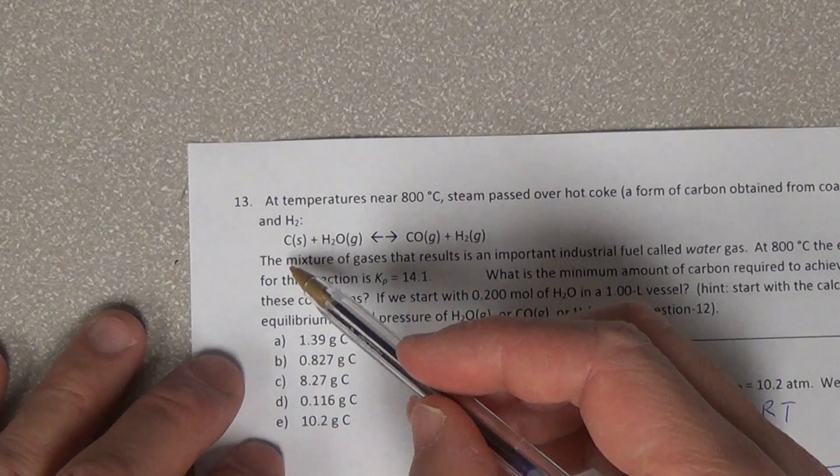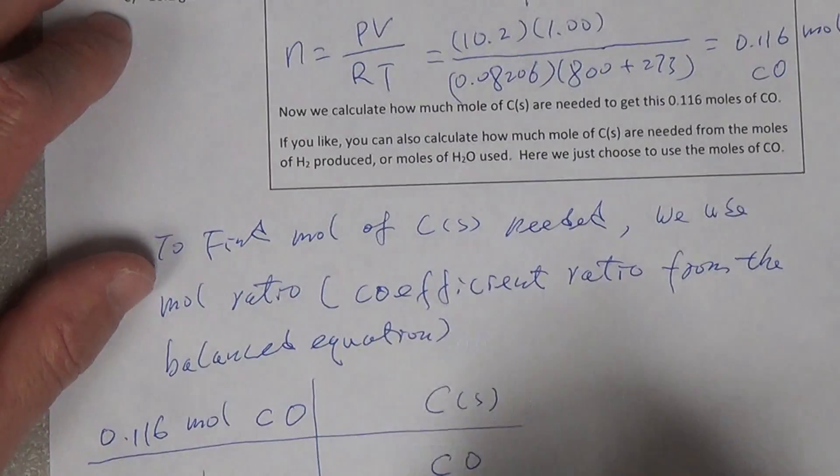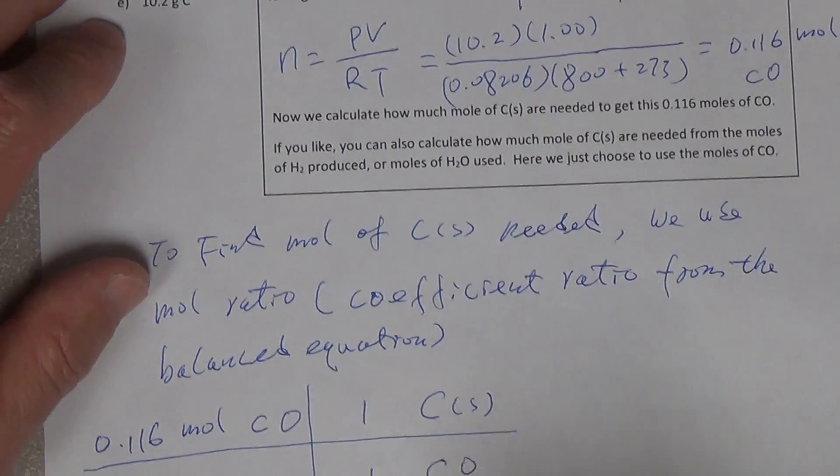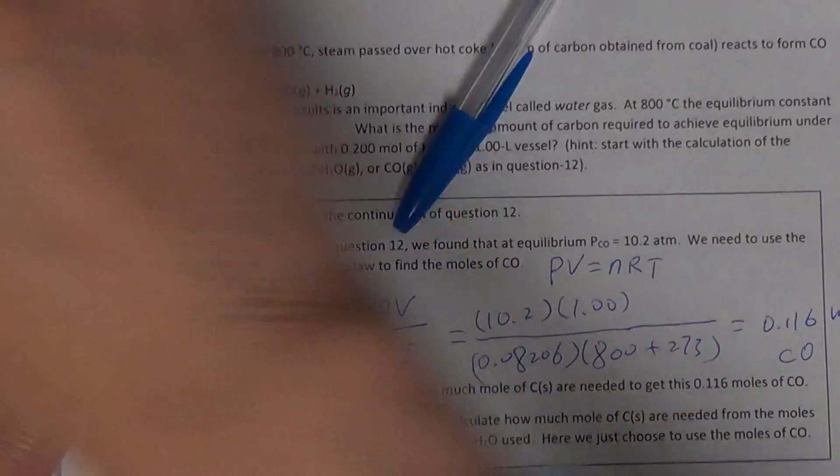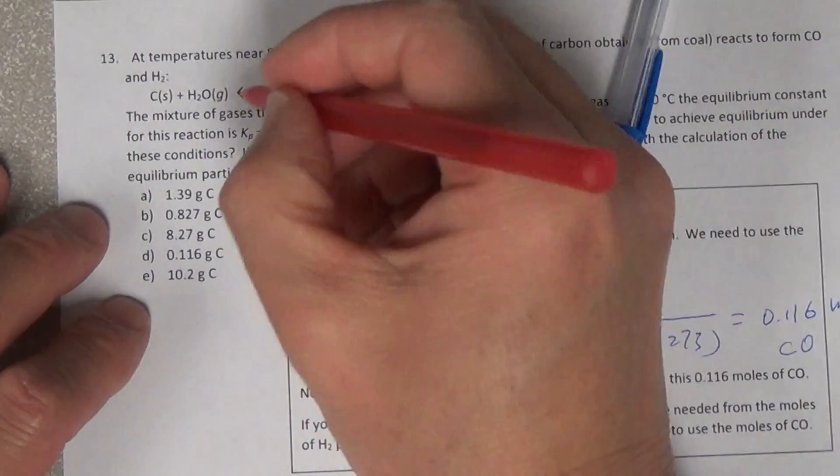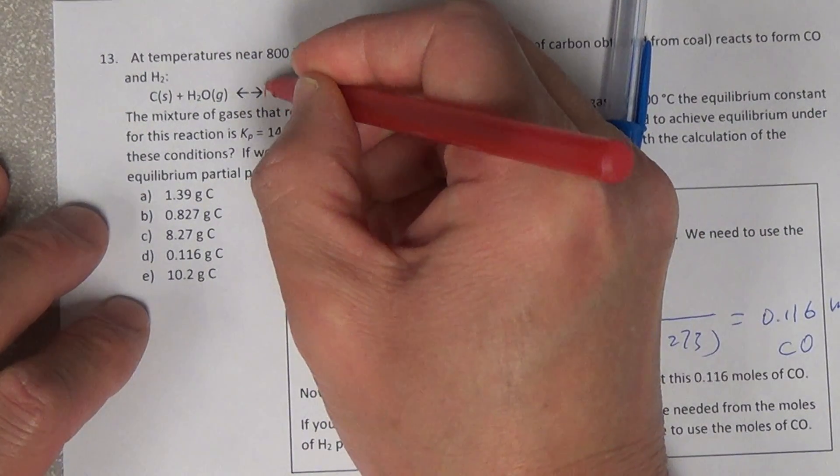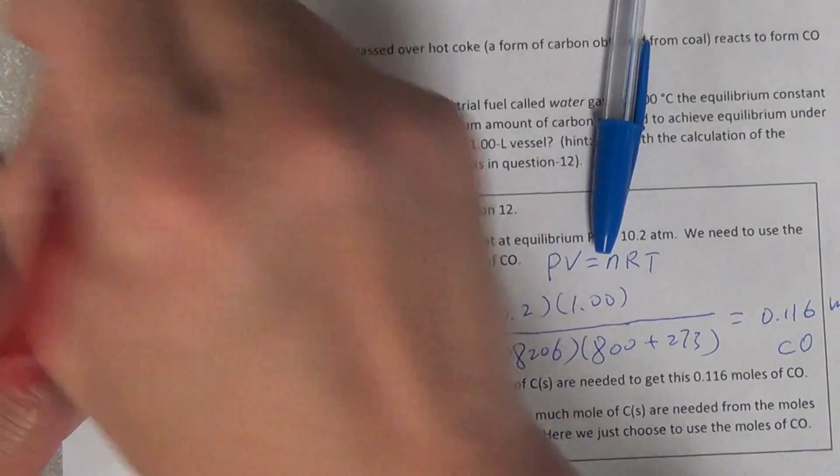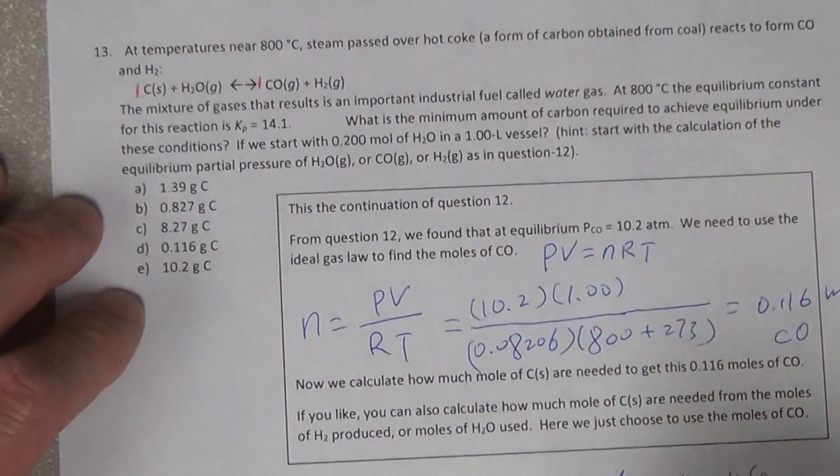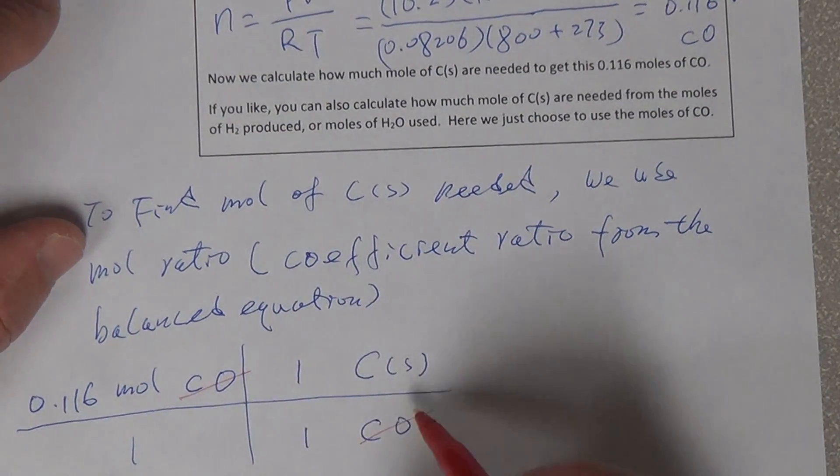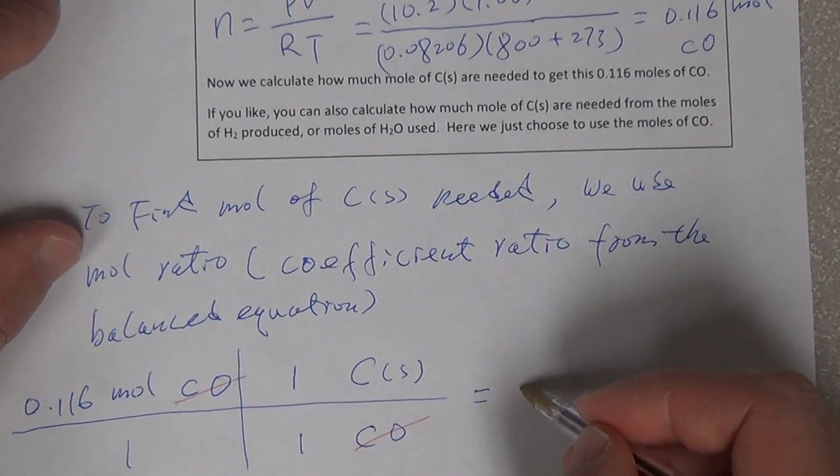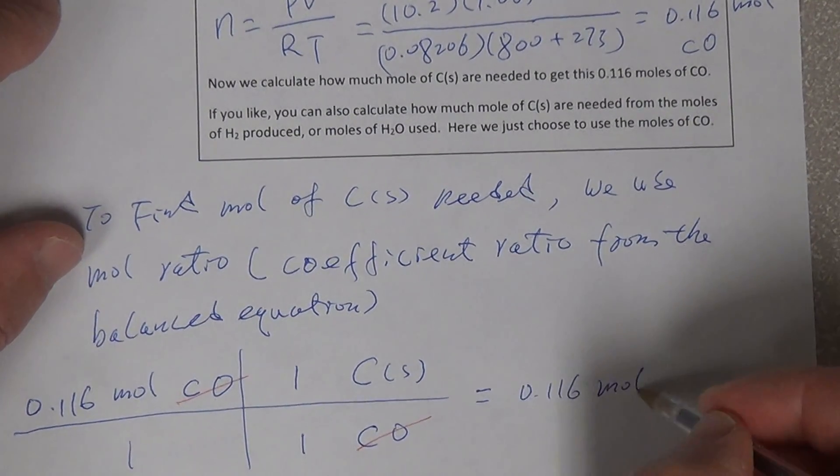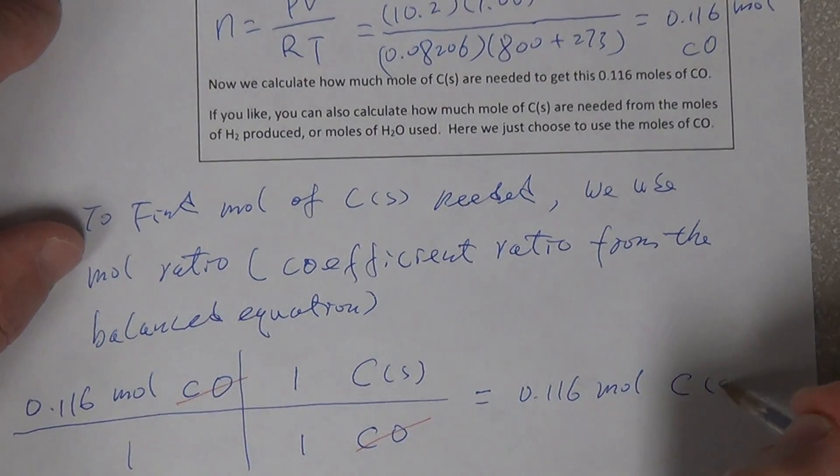For H2O is 1, for carbon solid is 1. So therefore it's 1 and 1. So again, where we get the 1 and 1, we get the 1 and 1 from the coefficient. So the coefficient here for CO is 1 omitted, for carbon solid is 1 omitted.